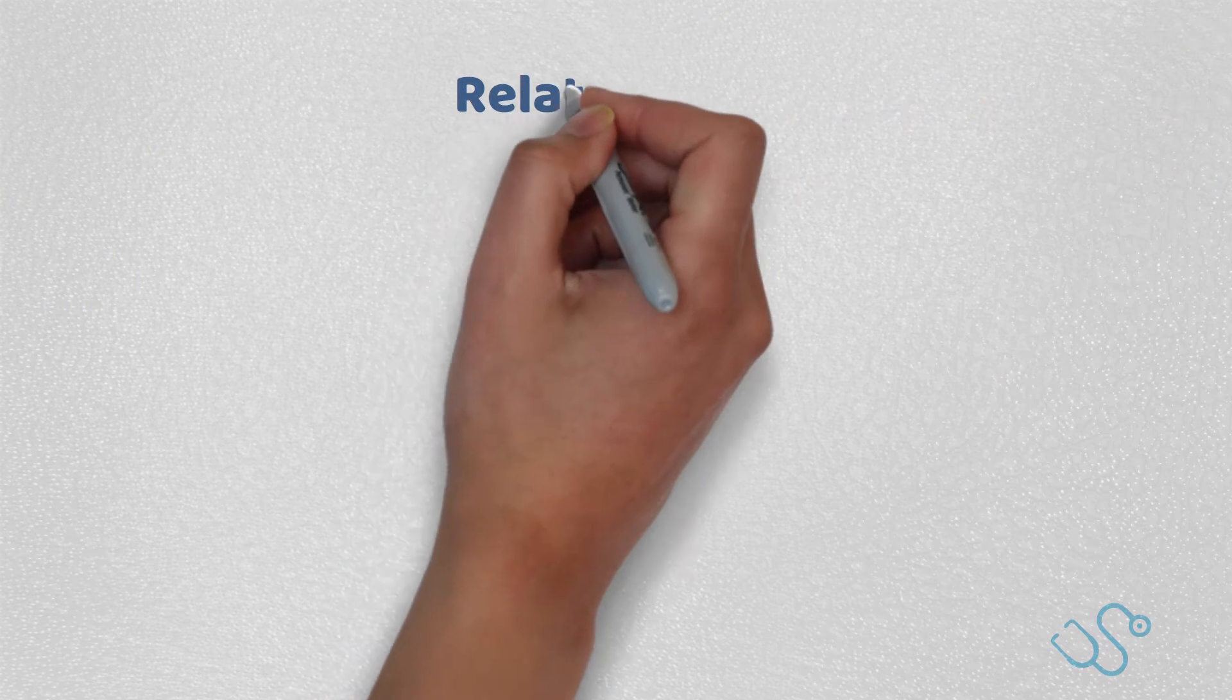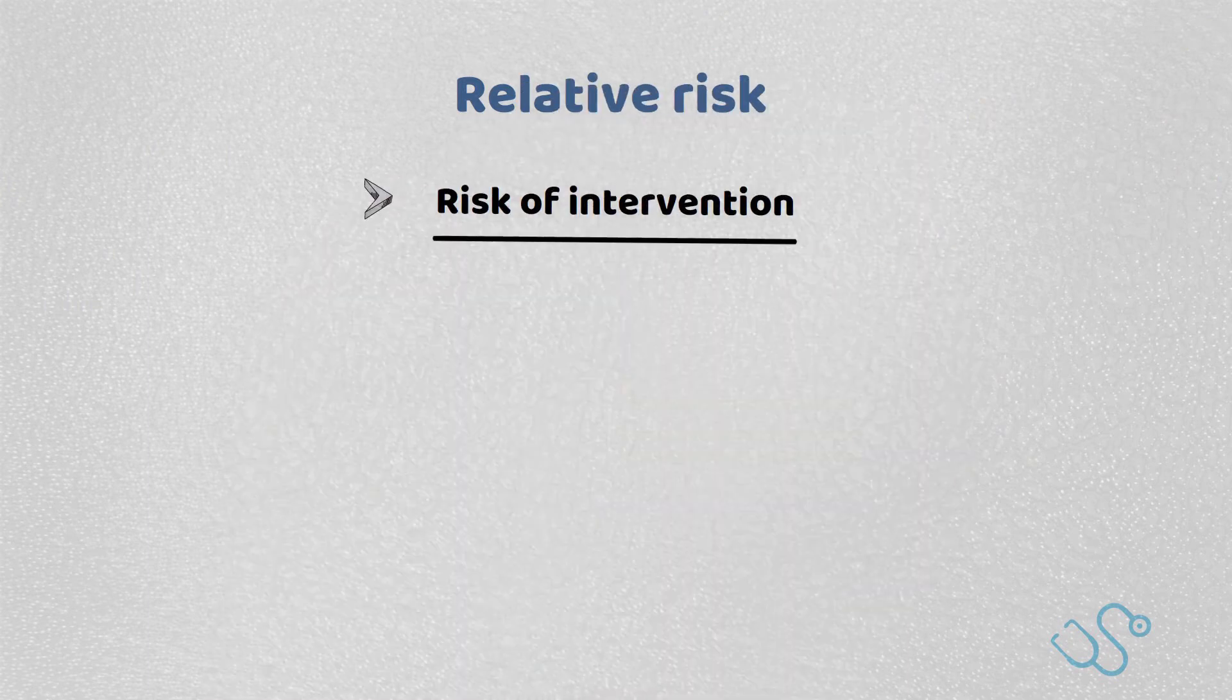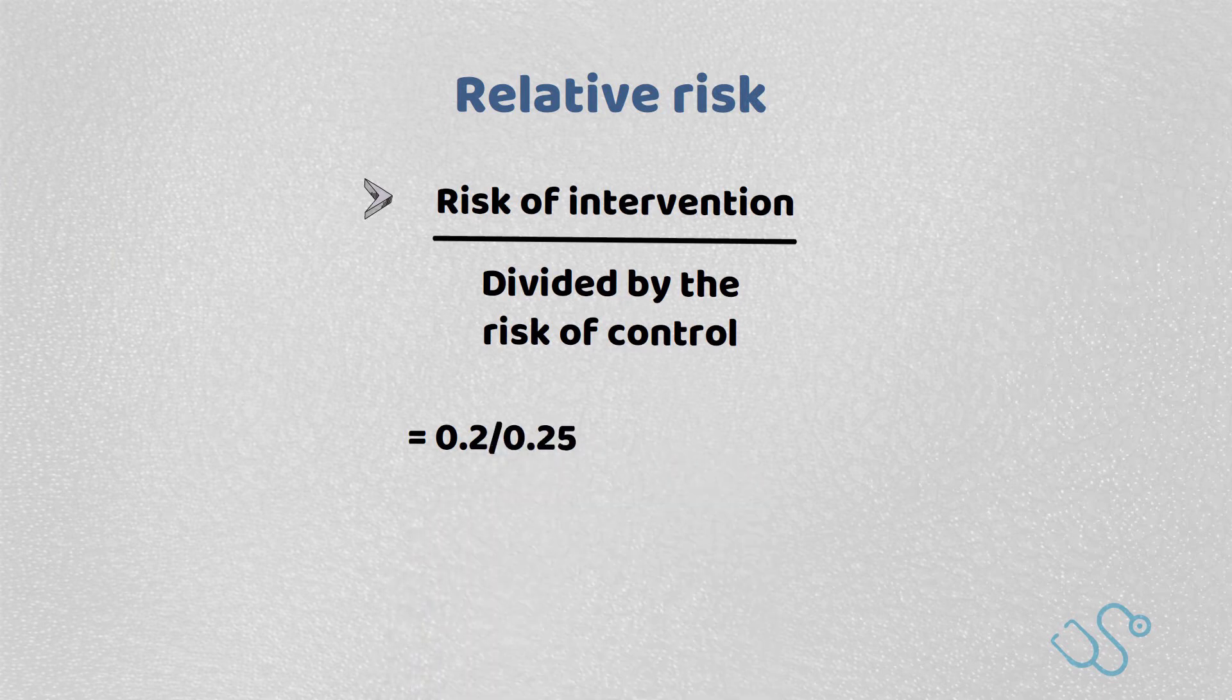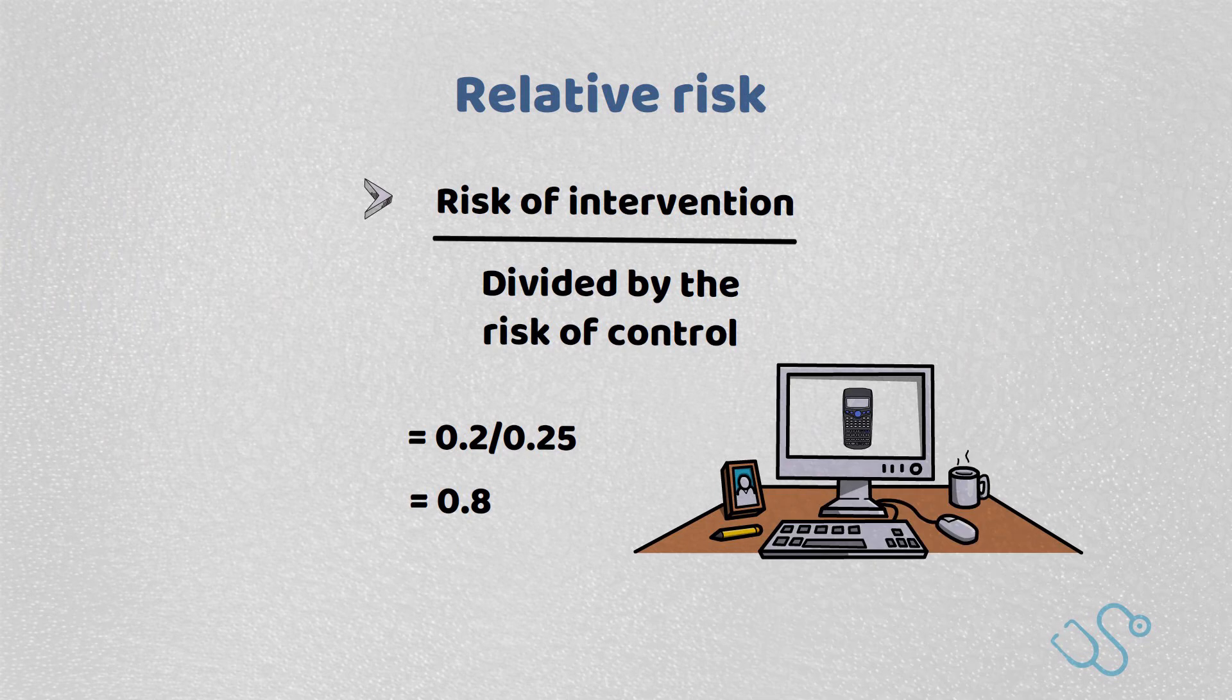So to work out the relative risk, it's the risk of intervention divided by the risk of control. In this case, that will be 0.2 over 0.25, which equals 0.8. Don't worry, you'll have an online calculator in the exam.